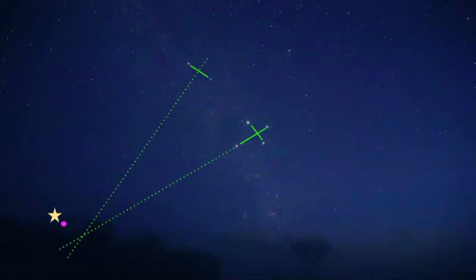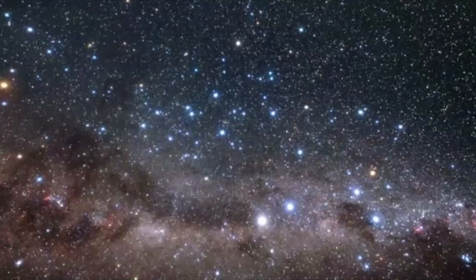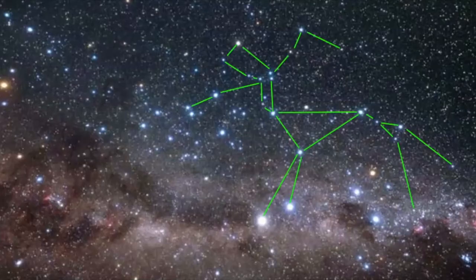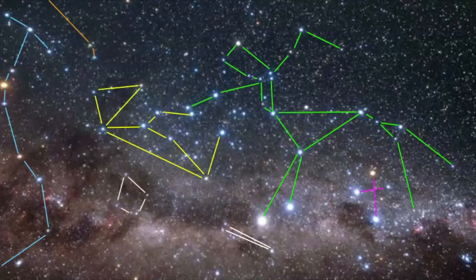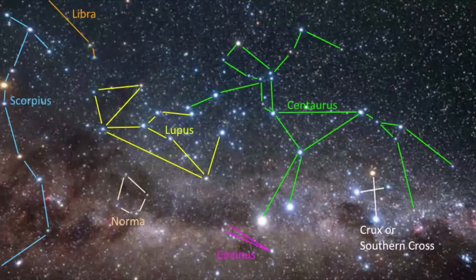The South Celestial Pole doesn't have a distinct star right on it like it does in the north with Polaris, but we can still use these stars as a guide to help us find this location in the sky. Here is a longer exposure photograph, where pictures of the stars are taken for a longer amount of time so they really shine. The brightest star in this photo is Alpha Centauri, and Alpha Centauri is really special because it's the closest star system to us. Notice that the Southern Cross is in between the legs of Centaurus.